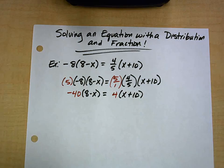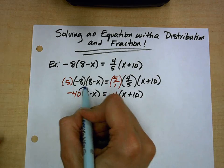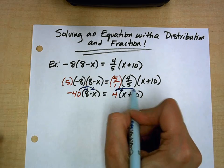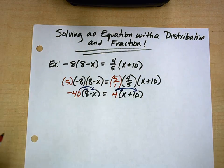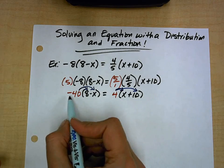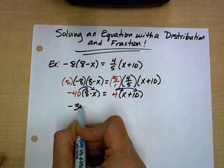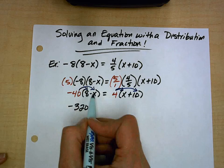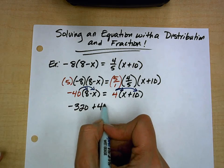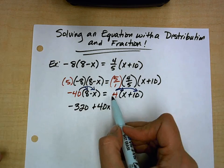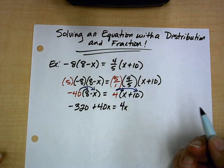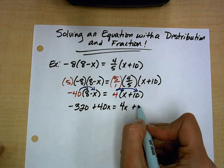Now both of these are now distributions. So I have distributive property on both sides of the equation. Negative 40 times 8 is negative 320. Negative 40 times negative x is positive 40x. 4 times x is 4x. And 4 times positive 10 is positive 40.